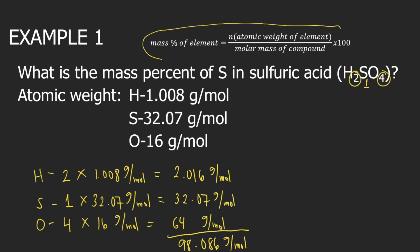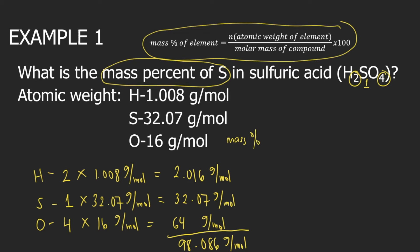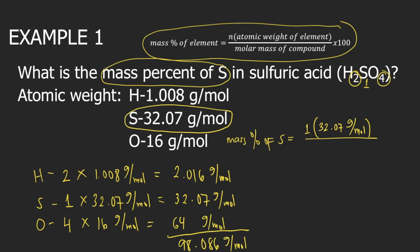Now let's use the formula for mass percent, and we are looking for the mass percent of sulfur. Mass percent of sulfur is equal to N — N is the number of sulfur atoms in sulfuric acid, so that is 1 — times the atomic weight of sulfur, 32.07 grams per mole, divided by the molar mass of the compound, 98.086 grams per mole, times 100. Grams per mole will cancel. We have 1 times 32.07 divided by 98.086 times 100, which is equal to 32.07 percent.